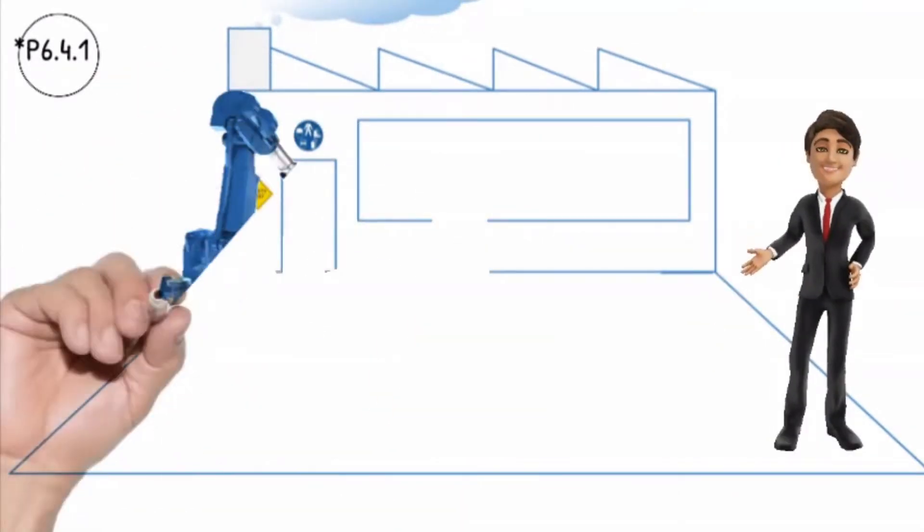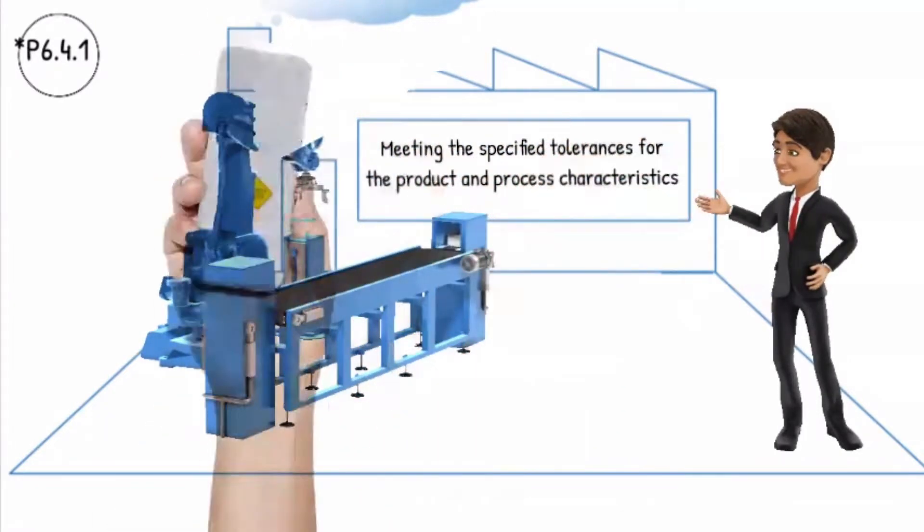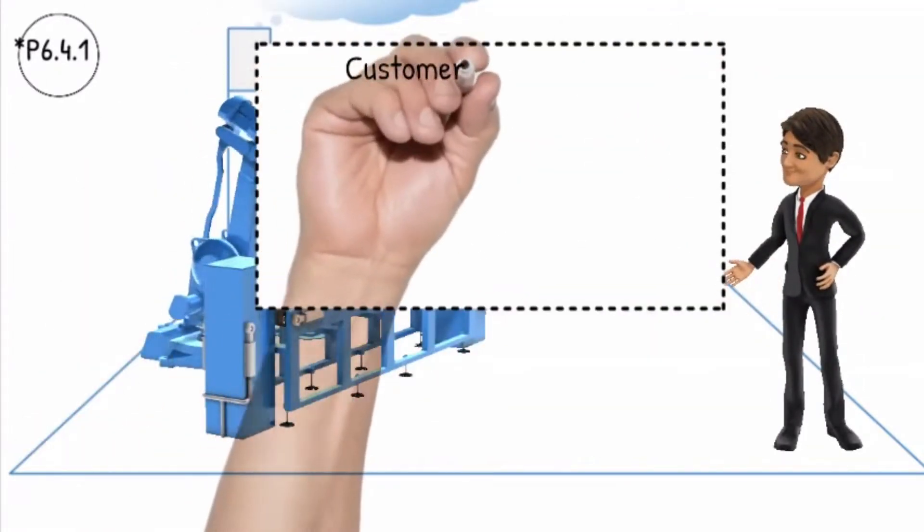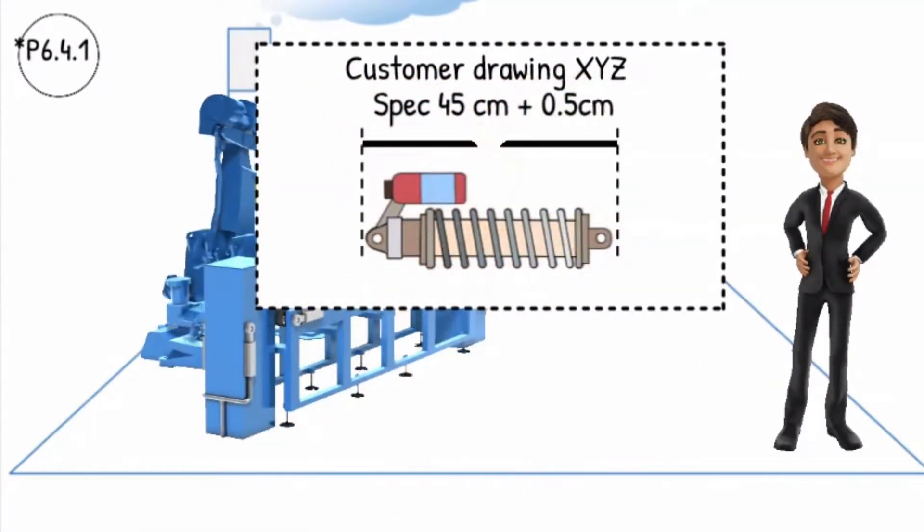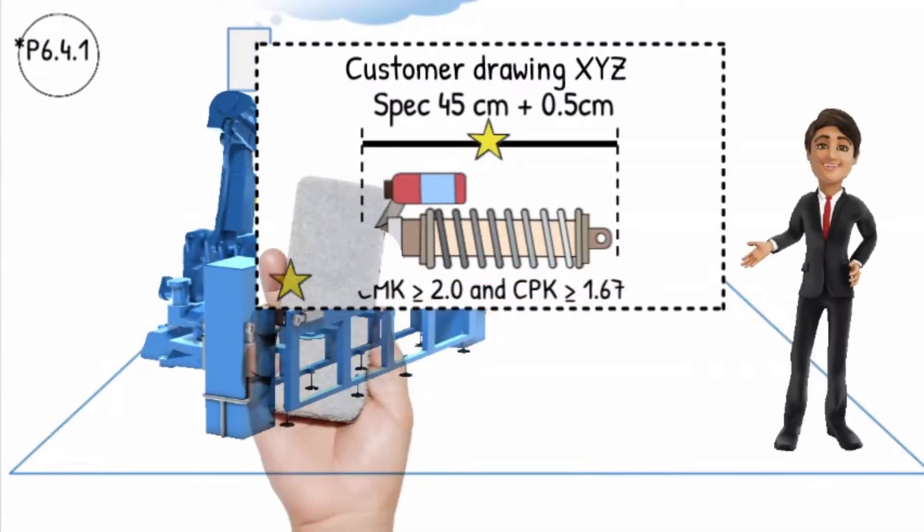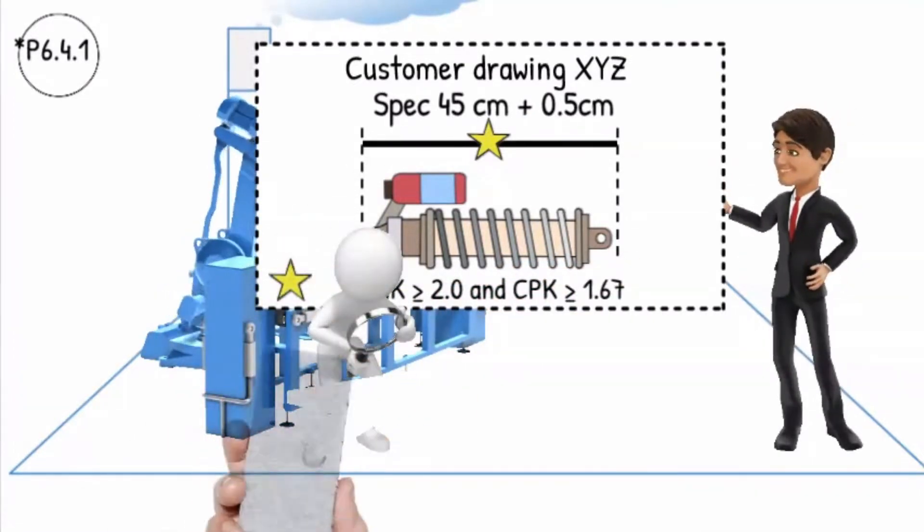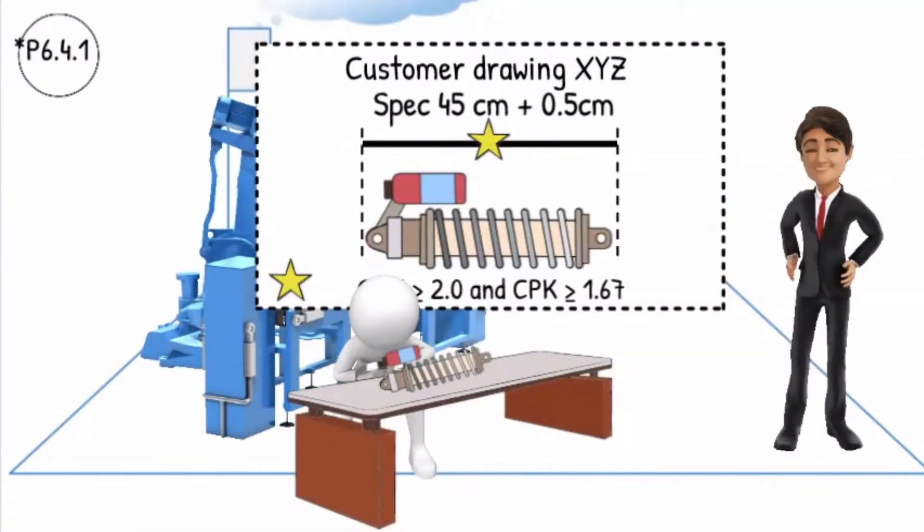The production facility, machinery, and equipment must be capable of meeting the specified tolerances for the product and process characteristics. The process capability must meet the requirements of the customer. A 100% inspection is required for significant characteristics where no capability level can be demonstrated.